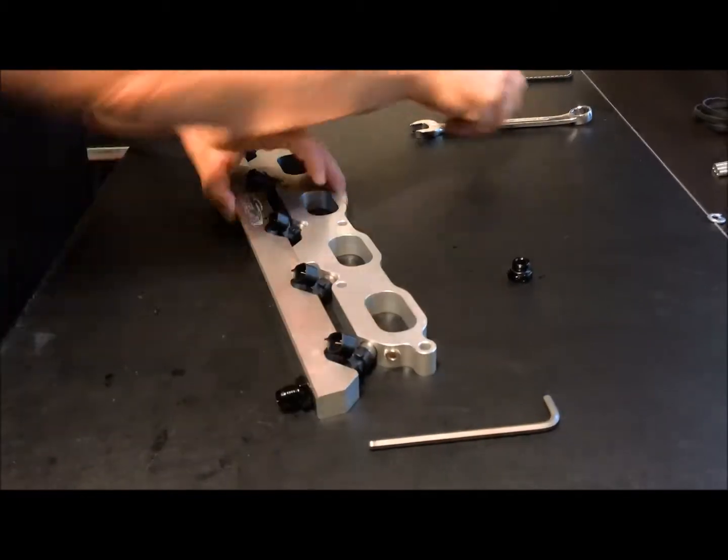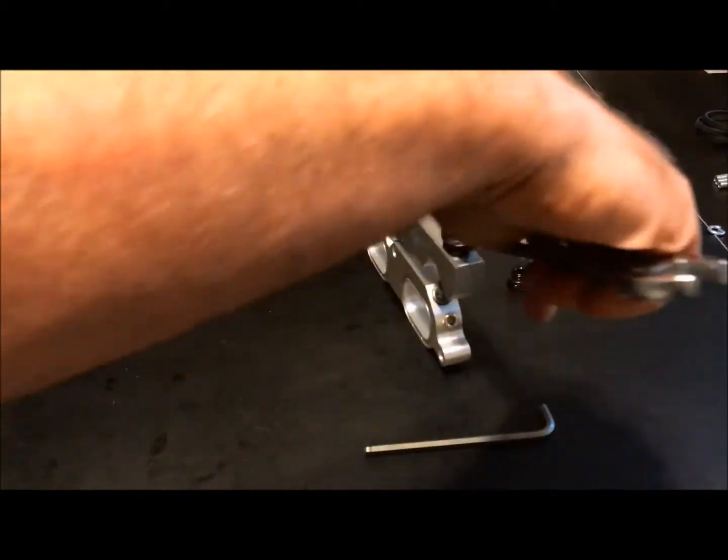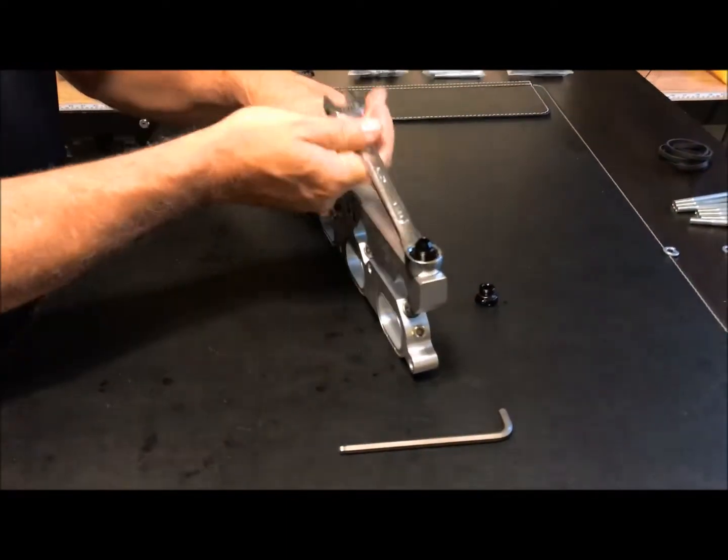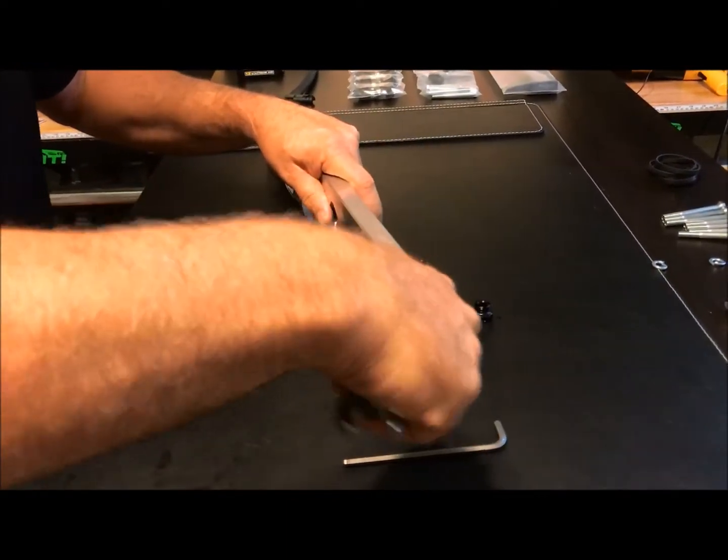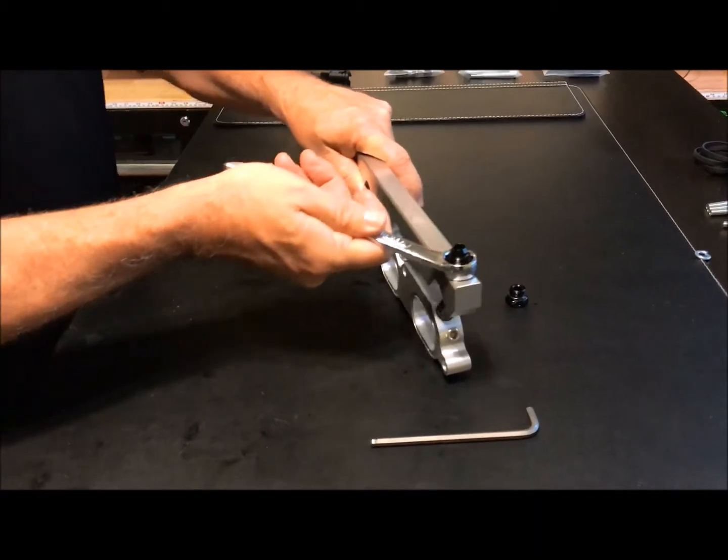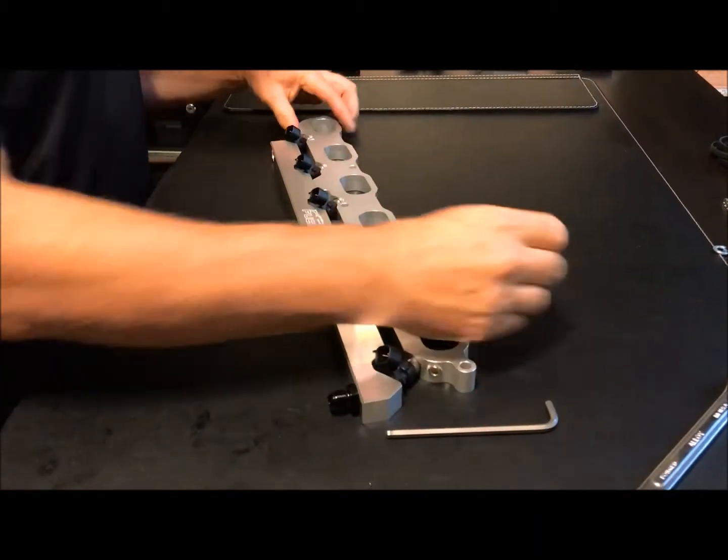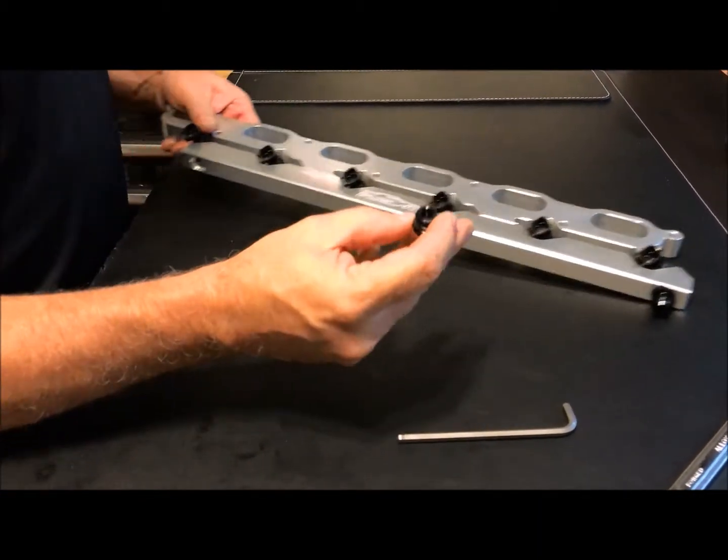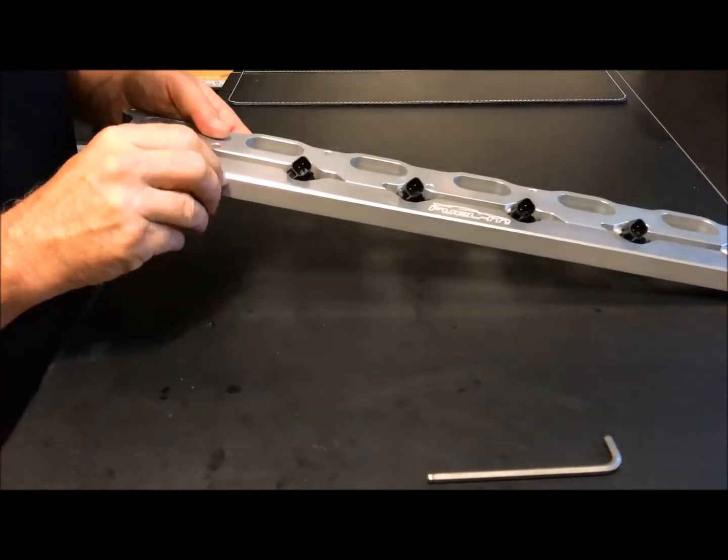And, then, that takes an 11/16ths inch wrench to tighten it up. Just get it snug. Don't over tighten. These are all aluminum parts, but you can put a little bit on it.